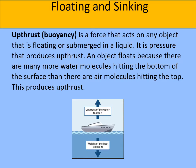An object that is completely or partly submerged in a liquid experiences a greater pressure on its bottom surface than on its top surface — there is a smaller weight of water pushing down on the top surface. The bigger pressure on the lower surface is there because it's deeper, so there is a bigger weight of water pushing down on it. This difference in pressure on the upper and lower surfaces causes an overall upward force which we call upthrust.